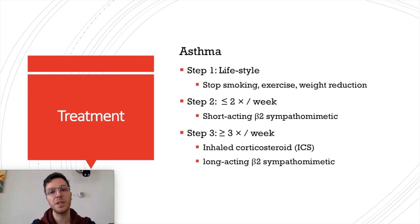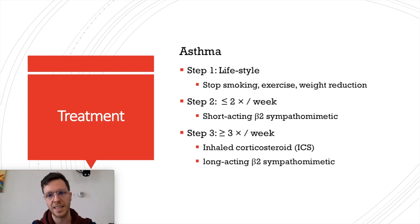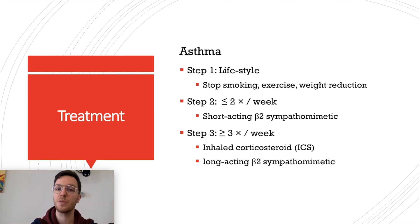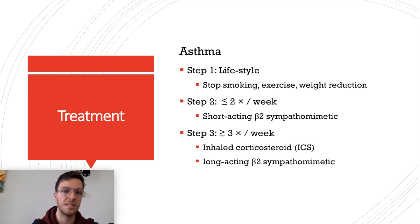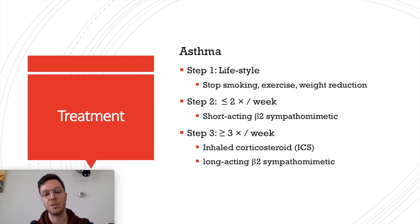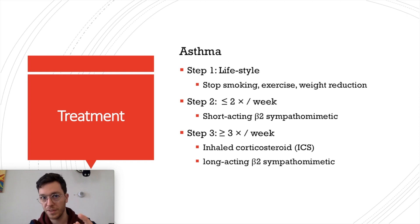Treatment of asthma consists of three steps. Step one: always perform lifestyle interventions — exercise regularly, lose weight if overweight, and stop smoking. If complaints persist, move to step two: short-acting beta-2 sympathomimetics, suitable for patients with fewer than two episodes per week — these bronchodilate and relieve symptoms. If still insufficient — more than three times per week — move to step three: inhaled corticosteroids (ICS) and long-acting beta-2 sympathomimetics. The ICS dose can be doubled each time there is insufficient response.